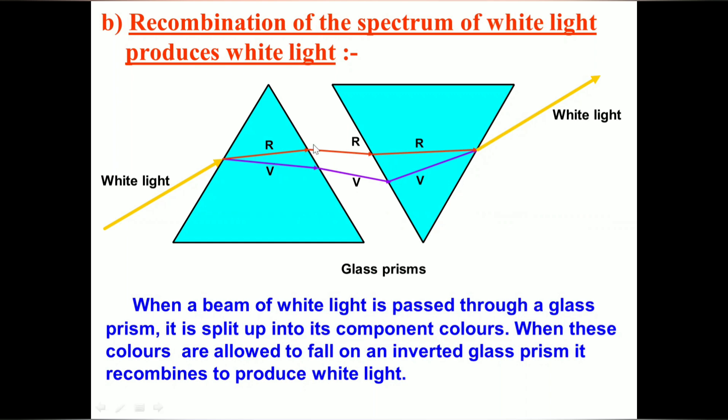When these colors pass through the inverted prism placed beside the first one, the output ray will be white light. This is because all seven colors combine to form white light.